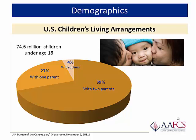Children's living arrangements are of great concern to family and consumer science professionals. In 2015, 73.6 million children were younger than 18 years old, according to childstats.gov. 68–69% lived with two parents, of whom 92% were their biological or adoptive parents. 27% lived with one parent, 87% of those with their mother. 4% lived with others, 57% with at least one grandparent, and others in foster care or other arrangements.